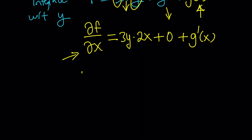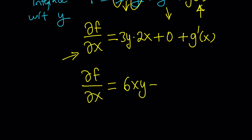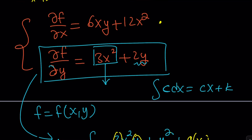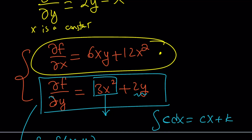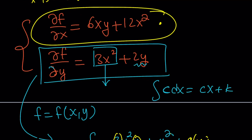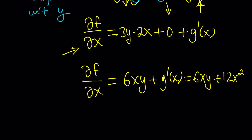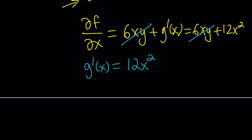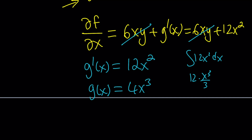So the partial derivative of f with respect to x is 6xy plus g prime of x. But we also know it's equal to 6xy plus 12x squared from our original system. Setting these equal: the 6xy cancels out, leaving us with g prime of x equals 12x squared. So we integrate 12x squared with respect to x, which gives 12 times x cubed divided by 3, and that becomes 4x cubed.